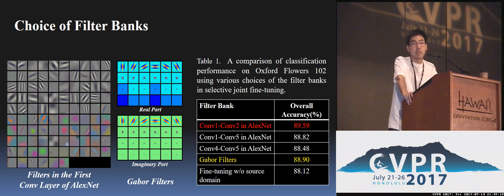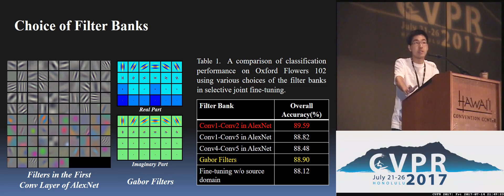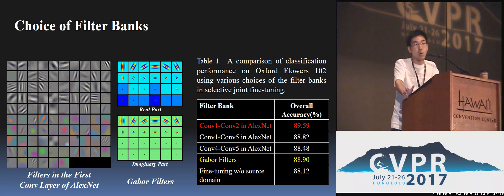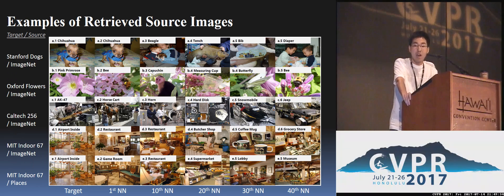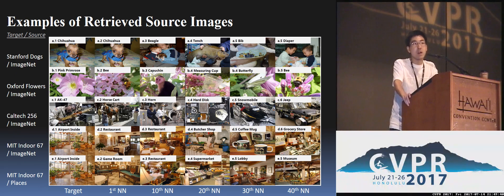Here is the visualization of the filter banks. The left shows the first layer of AlexNet, and the middle shows the Gabor filters. Many filters in these two filter banks look very similar. The table here validates our choice of filter banks. We also visually show some of the retrieved nearest neighbors, where each row corresponds to a different target domain. These nearest neighbors share similar low-level characteristics but different high-level contents.